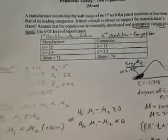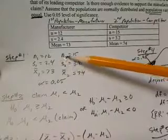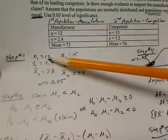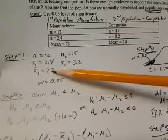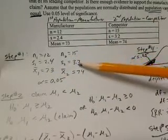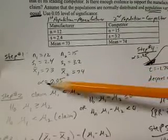When conducting a hypothesis test, the first step is to identify the given values in symbolic form. We'll label any subscripts as whether it's the first population or the second population. Our sample size for the first population is n1=12, s1=2.4, x̄1=73. For the competitor: n2=15, s2=3.2, and x̄2=74. We're using a level of significance where α=0.05.